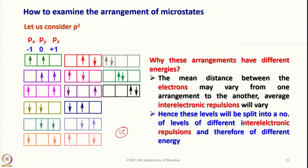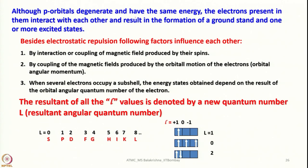Why do these arrangements have different energies? As mentioned, the mean distance between electrons varies from one arrangement to another, so average inter-electronic repulsion varies. As a result, these levels split into a number of levels of different inter-electronic repulsions and therefore of different energies. Once selection rules are applied, most transitions will be eliminated and the spectrum simplified. Although p orbitals are degenerate and have the same energy, electrons present in them interact with each other, resulting in the formation of a ground state and one or more excited states.